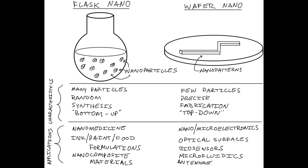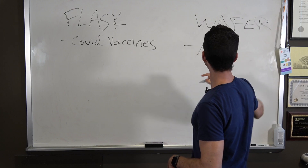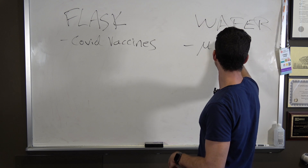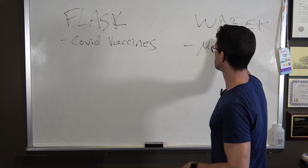Flask nano is stuff like COVID vaccines. Wafer nano is stuff like microelectronics — that's a mu for micro — electronics.